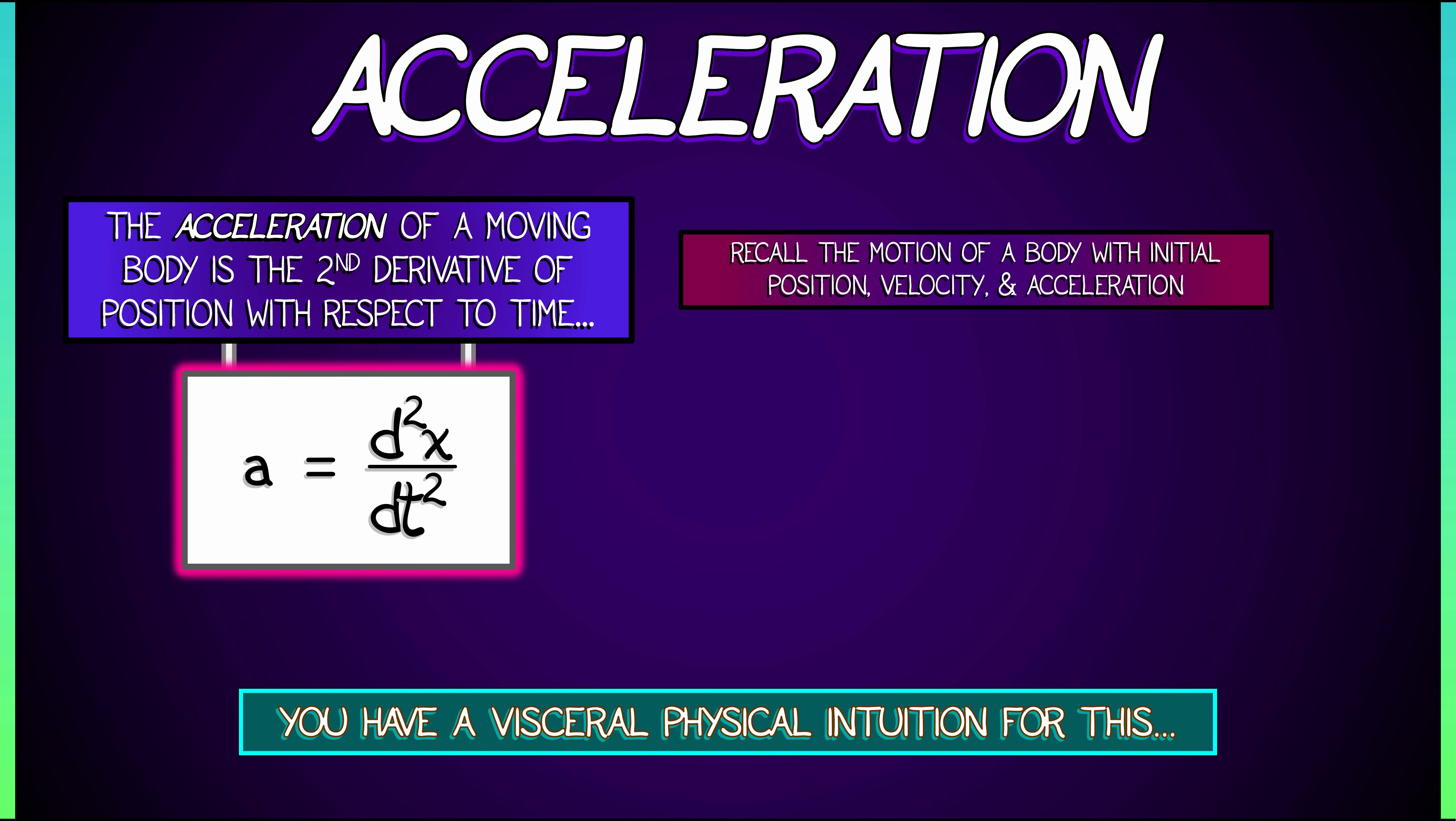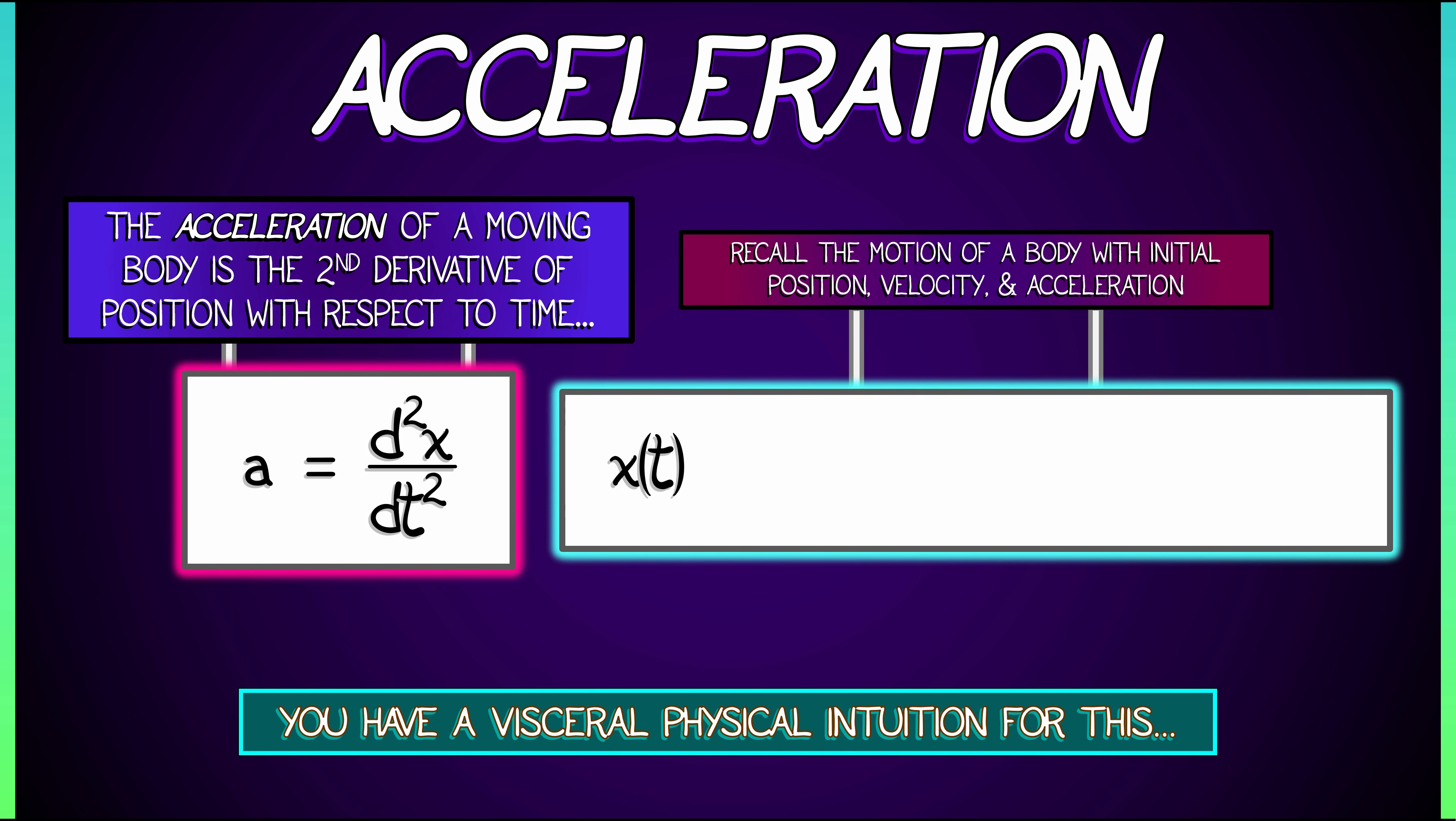If you've got a body with initial position, velocity, and acceleration, then the position x as a function of time t can be written as x0, the initial position, plus v0 t, where v0 is the initial velocity. And then what comes next?